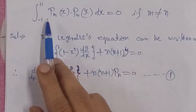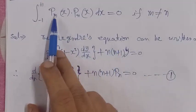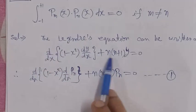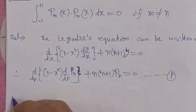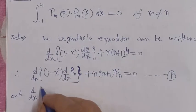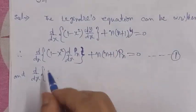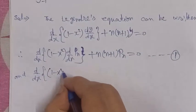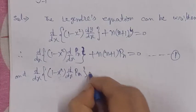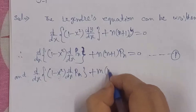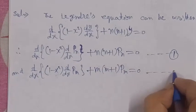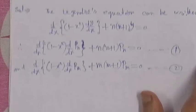Similarly, if Pₘ satisfies the Legendre equation with index m, then substituting y = Pₘ gives: d/dx[(1 - x²) dPₘ/dx] + m(m+1)Pₘ = 0. We call this equation number two.